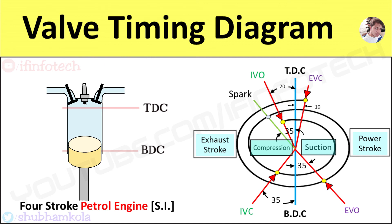Now we'll see why we need valve timing diagrams. The reason is that a normal engine completes around 1 lakh cycles per minute. There are a number of processes involved in a single cycle, which makes it necessary for an effective system that can enable high compression ratio, cleaning of the engine cylinder, and ideal timing for the opening and closing of the inlet and exhaust valves to protect the engine from defects like knocking or detonation.